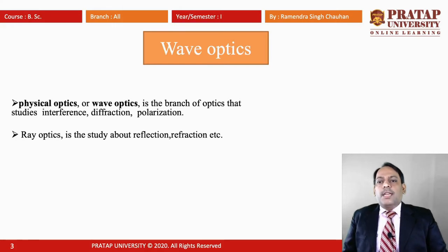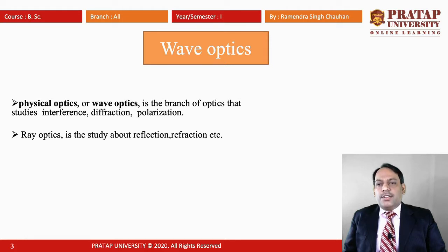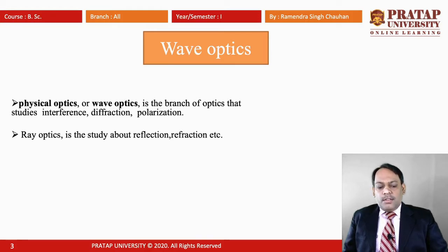In Optics we have two types of branches. One is Physical Optics or Wave Optics, which is the branch that studies Interference, Diffraction, and Polarization. The second one is Ray Optics, which involves the study of Reflection and Refraction. Reflection and Refraction are related to the particle nature of light, while Interference, Diffraction, and Polarization are related to the wave nature of light.